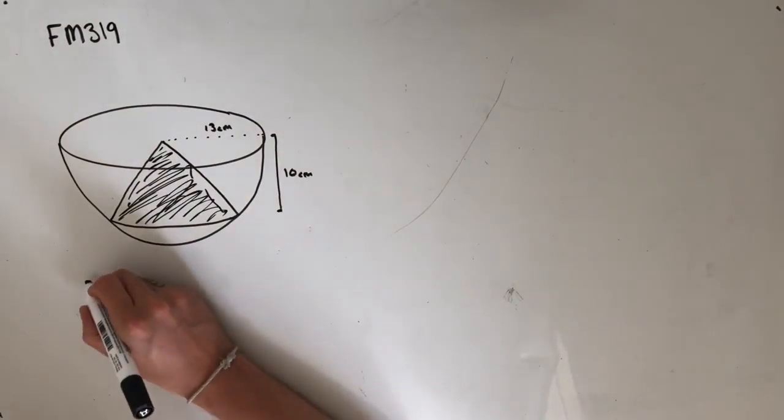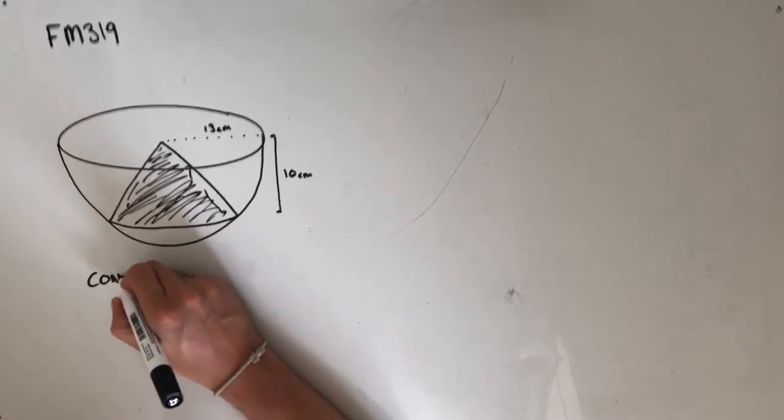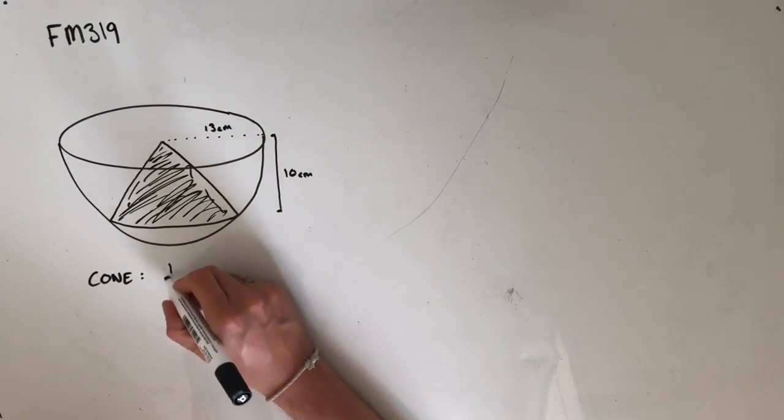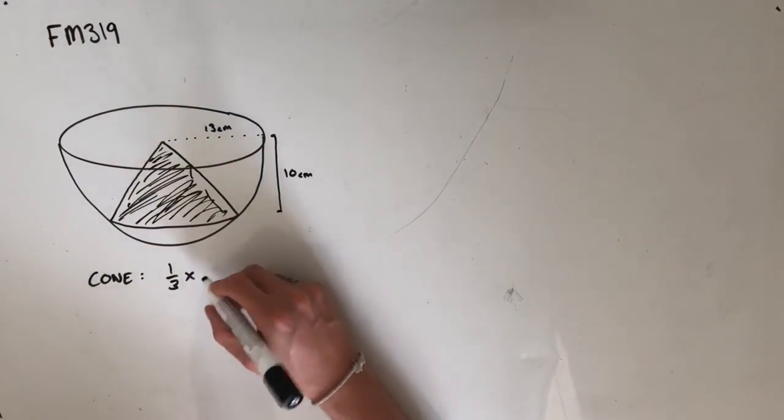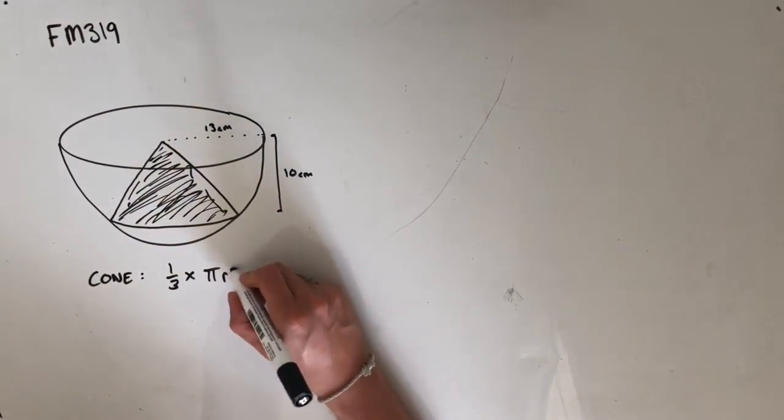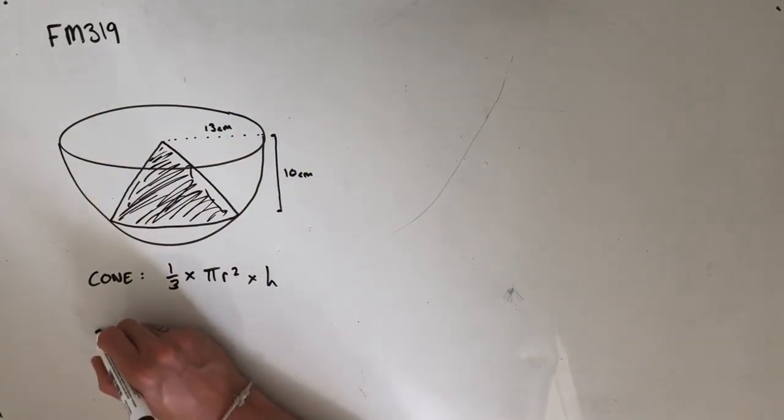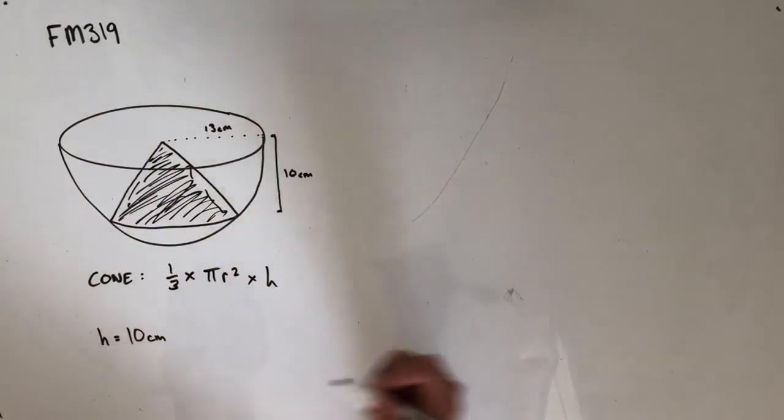We're going to start by looking at the equation for the volume of a cone. In order to find the volume of a cone, we're going to have to take one-third times pi times r squared times the height of the cone. We know that the height of this cone is going to be 10 centimetres.